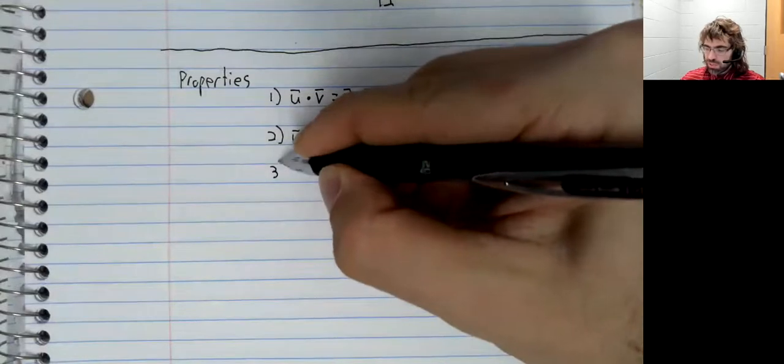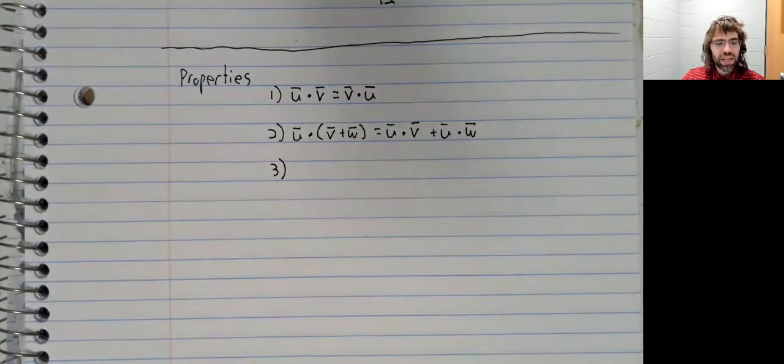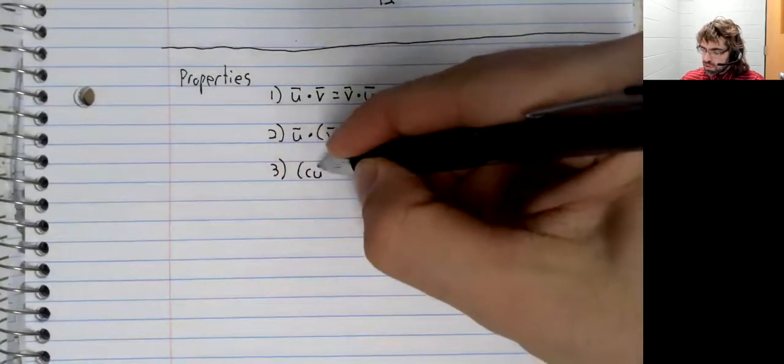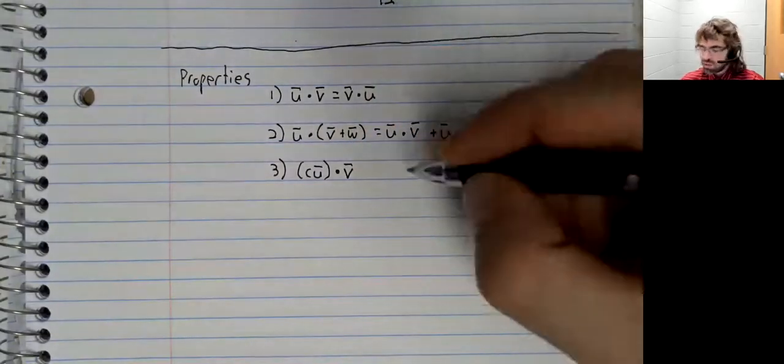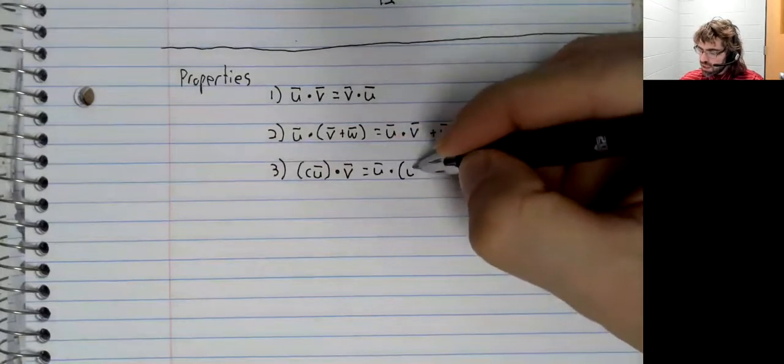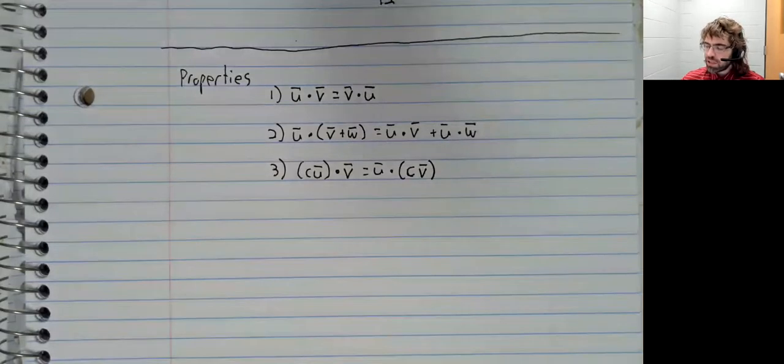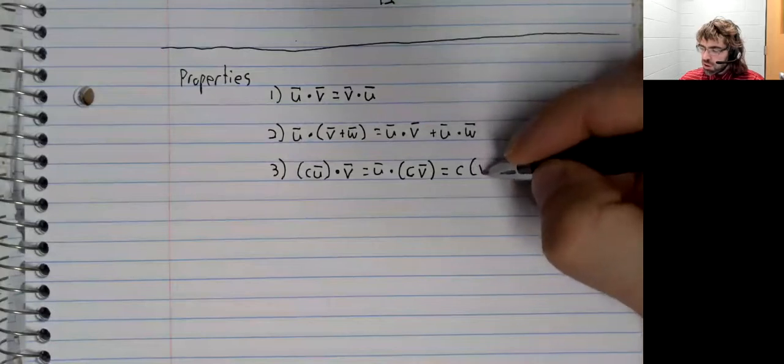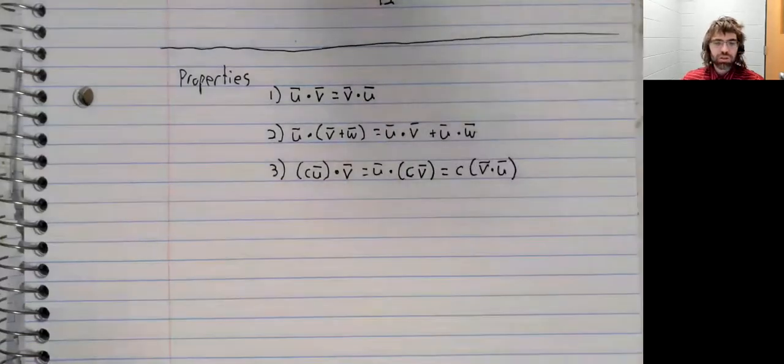Just as with other types of multiplication we have seen in this class, we can move scalars around. So if we have a dot product that looks like this, we can move the scalar so that it's attached to the V instead of the U, or we could move the scalar completely out of the dot product.